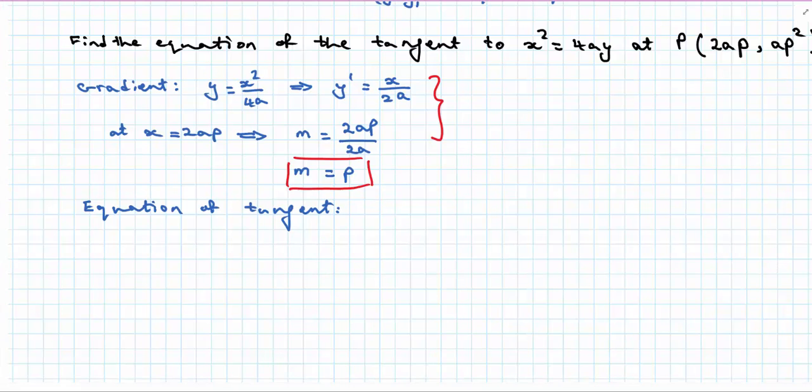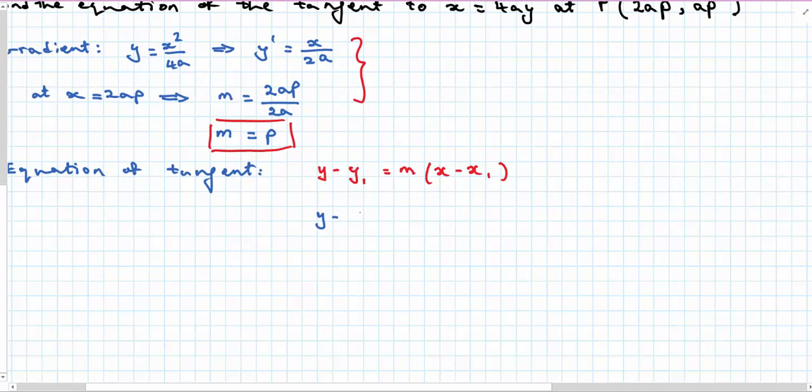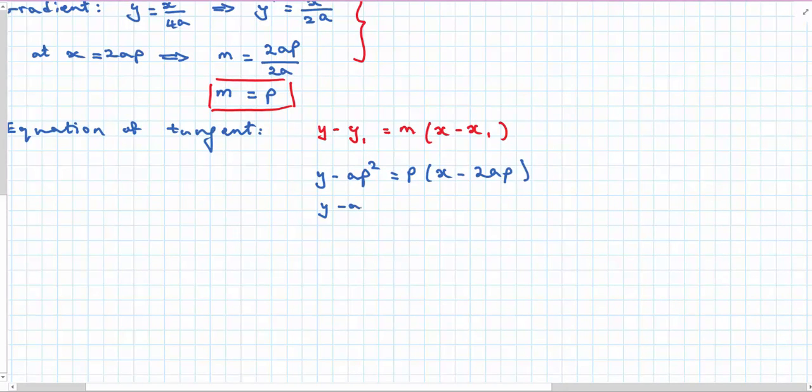Now I can write the equation of the tangent. I am going to use my equation y minus y1 equals m times x minus x1 and now I need to substitute for y1 and x1 the parametric versions. So y minus ap squared equals p times x minus 2ap. I am going to expand. So y minus ap squared is px minus 2ap squared. So y is px minus ap squared.